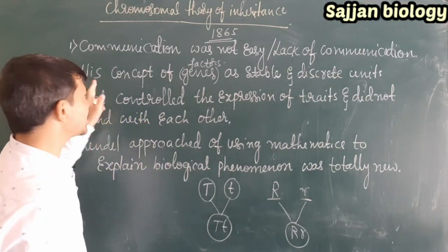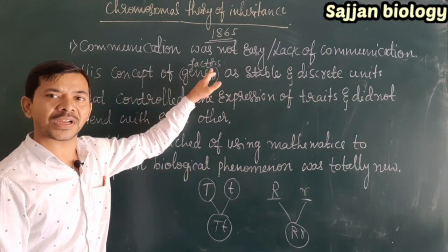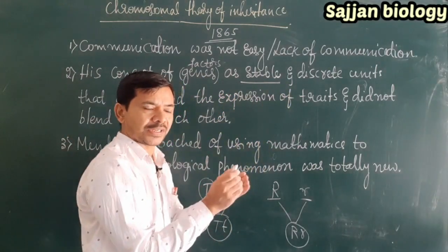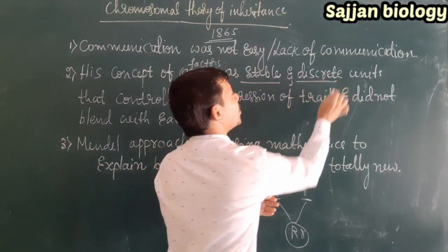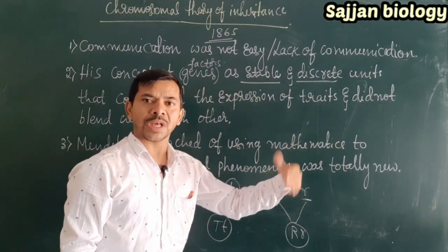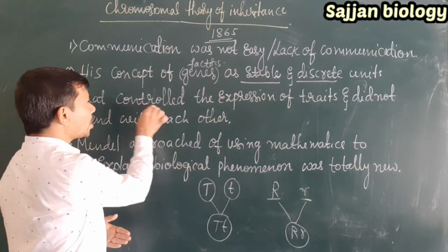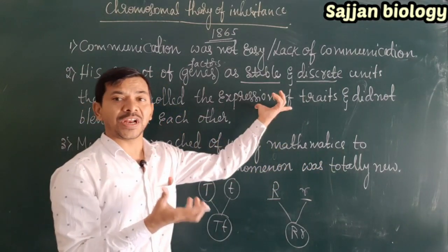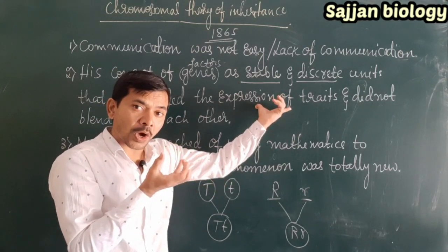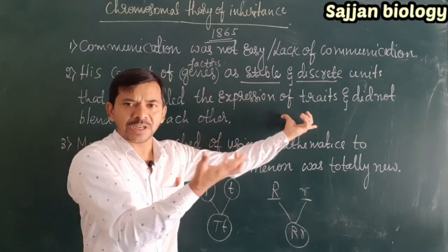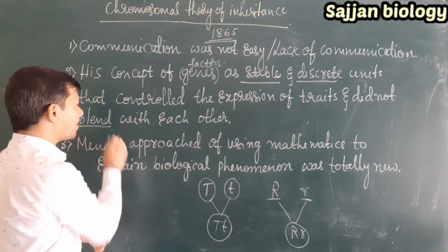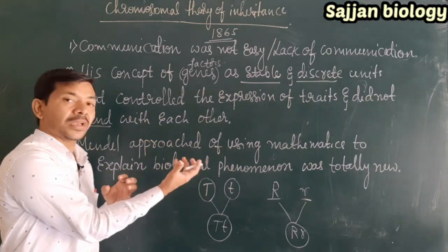The second reason was his concept of factors. Factors are nothing but genes — they are stable, fixed, and discrete units. Discrete means non-continuous units; they are not continuous. So they are non-continuous units that control the expression of traits, where traits means characters. And genes did not blend, meaning they did not mix with each other.